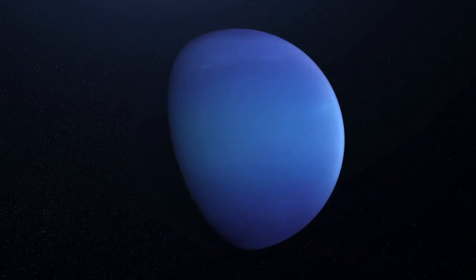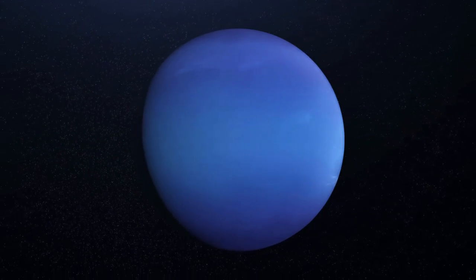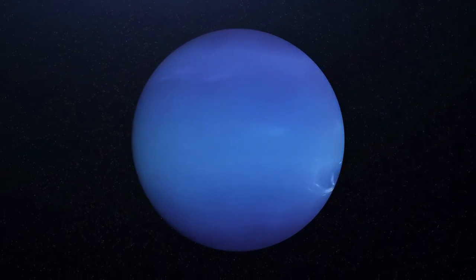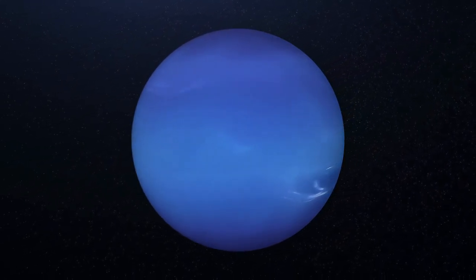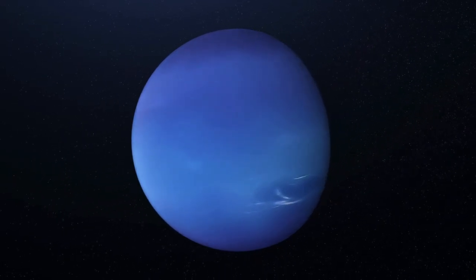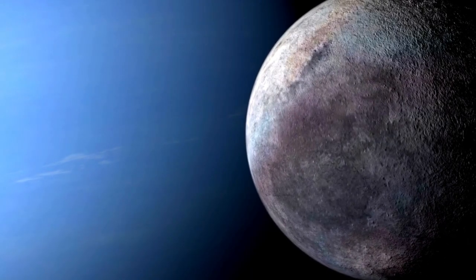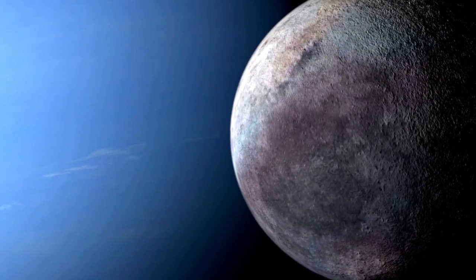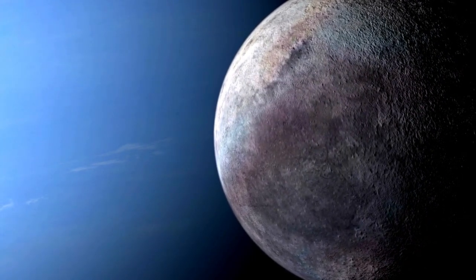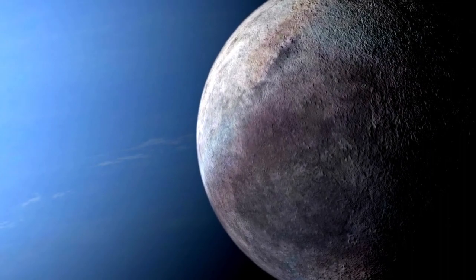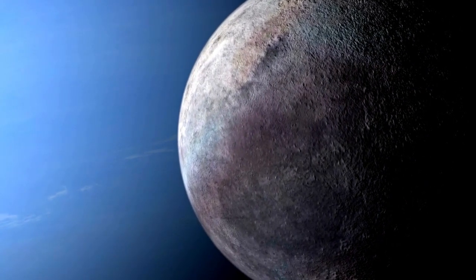Neptune is the eighth and farthest planet from the sun. It is also an ice giant and has the strongest winds of any planet in our solar system. Neptune's largest moon, Triton, is one of the coldest objects in the solar system and is believed to be a captured Kuiper belt object.